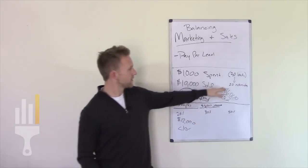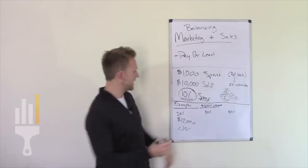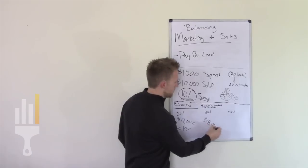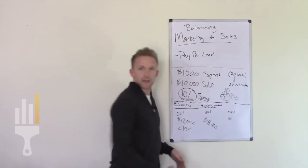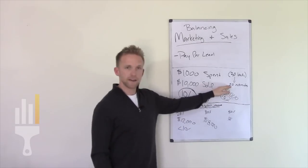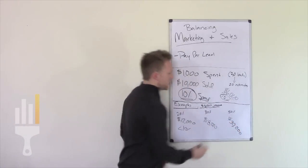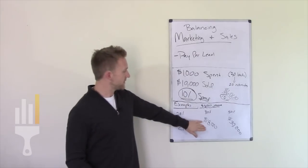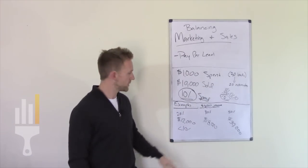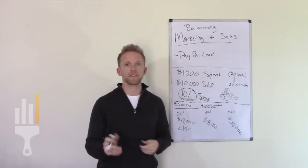Then we have 30%. So at 30%, we do 20 estimates, we booked six jobs at $3,000, that's $18,000 sold. And then if you start to get really good and you can close half of your estimates, you're booking 10 jobs, $3,000 per job, we're at $30,000. Now if we do the math on these, $18,000, we spend $1,000, book $18,000, that's about 6% is what we're spending on marketing. Here, we book $30,000, by spending $1,000, we're at 3.3% spent on marketing.